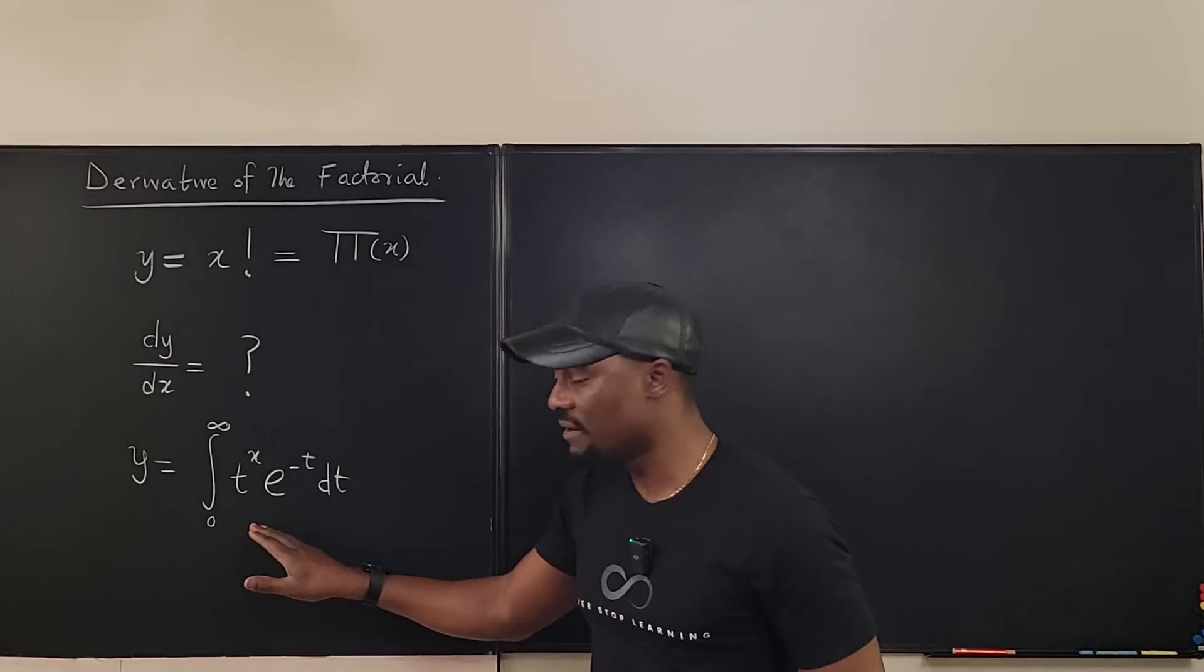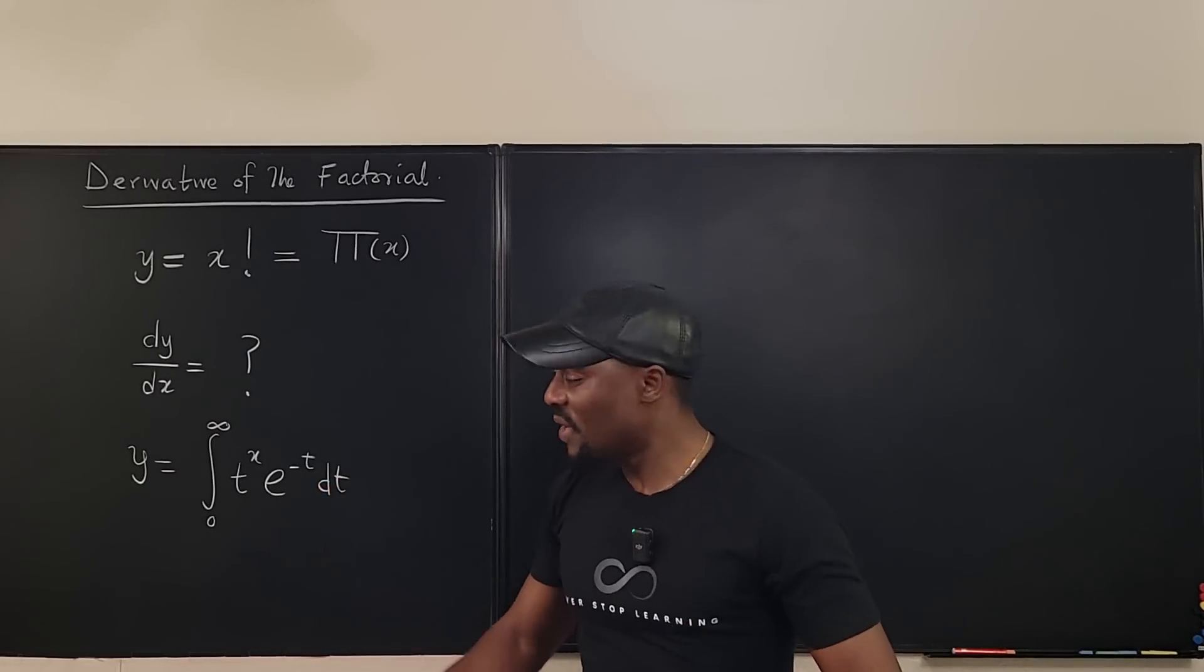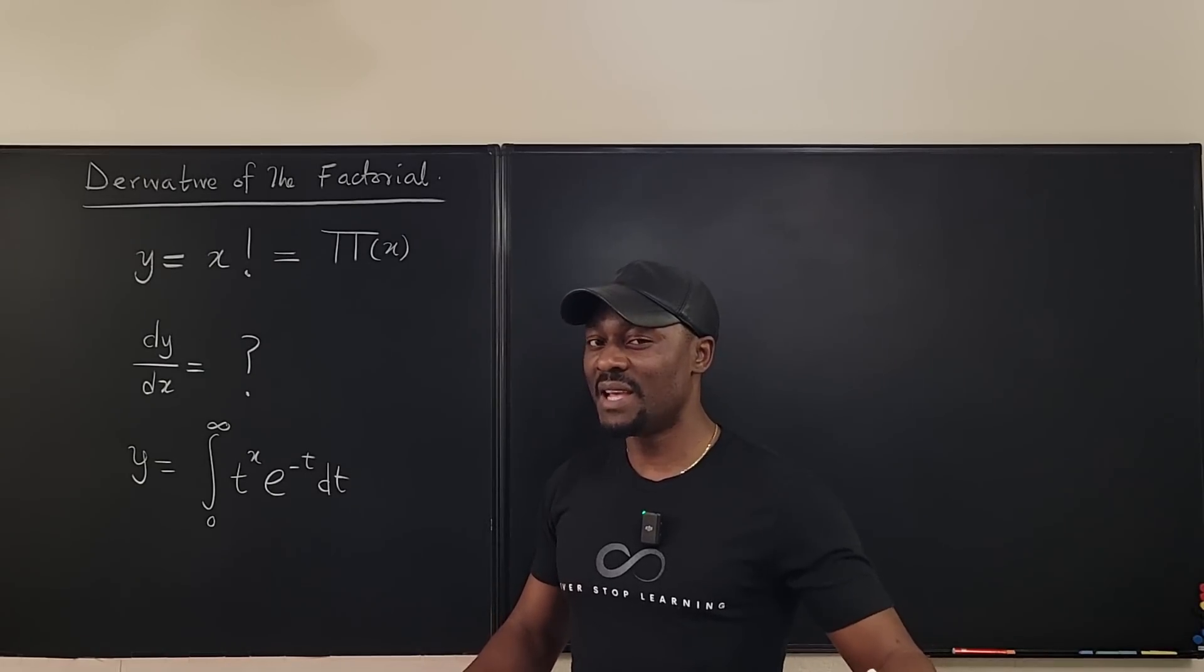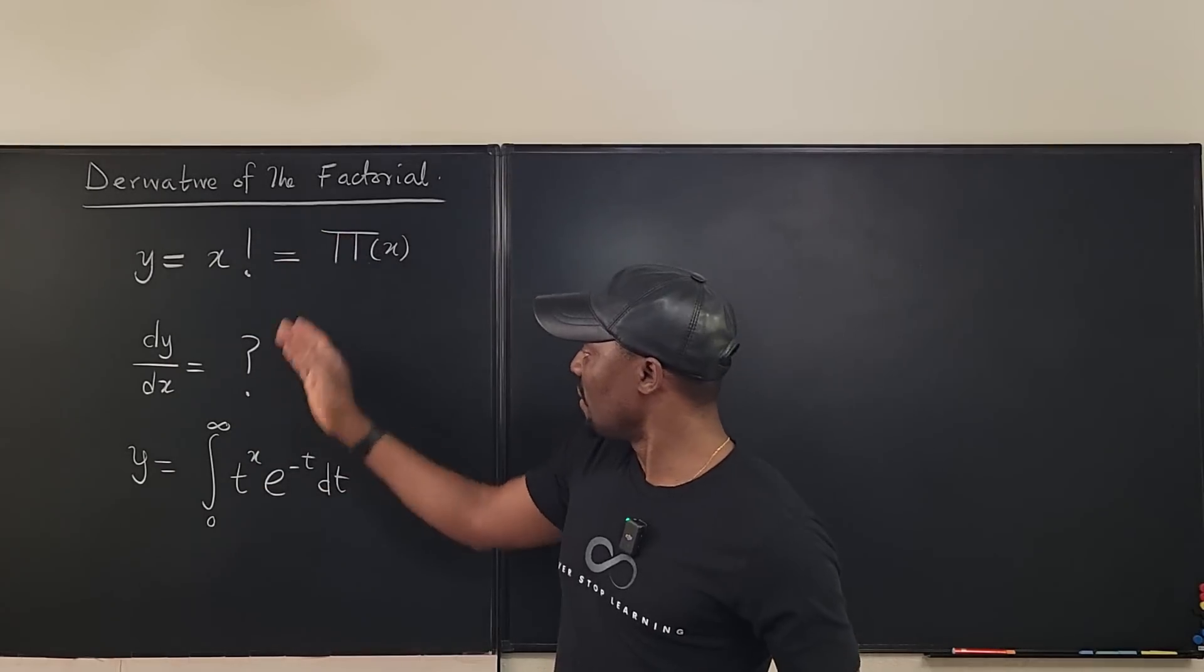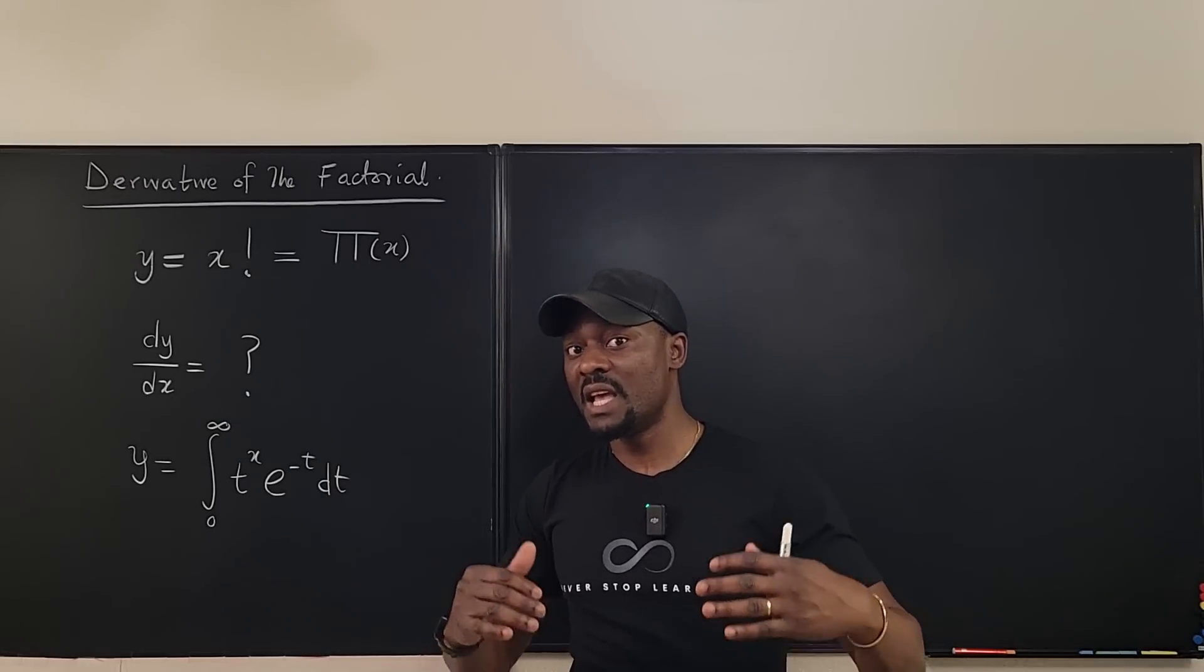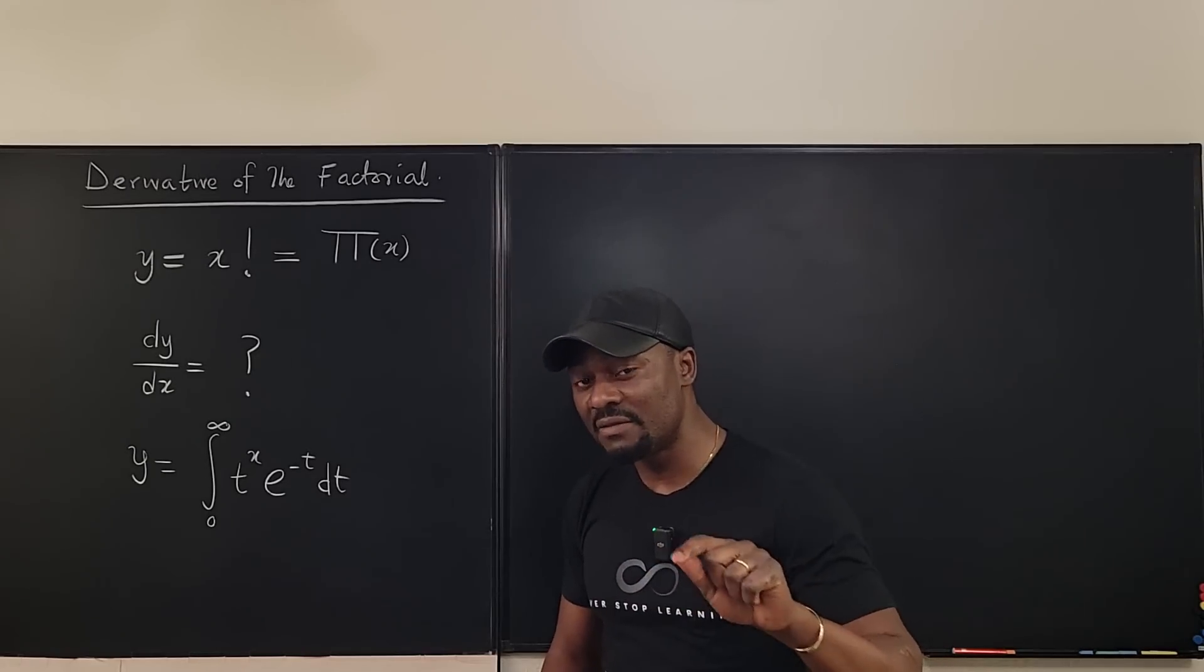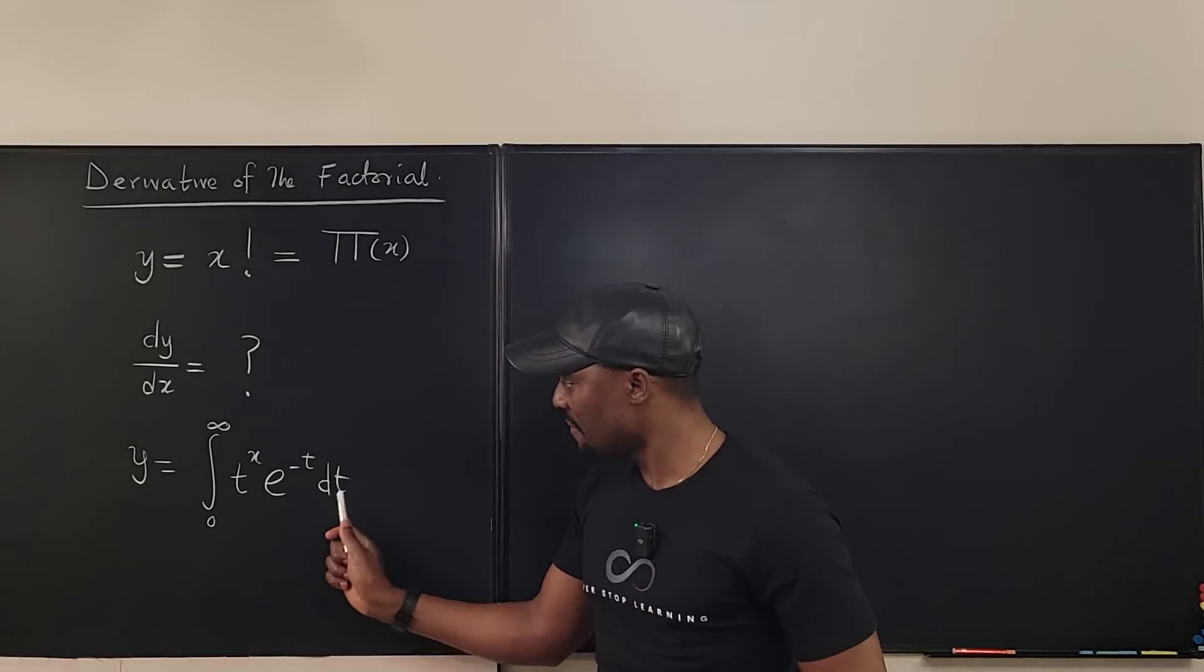Now, this is a multi-variable function. And the only way you can differentiate this is if you apply Leibniz integral rule. I think I mentioned it in the other video when I actually obtained the pi function or the gamma function. When I proved the gamma function, I talked about Leibniz integral rule. And what does it say? It says, if you want to take the derivative of the integral of a multi-variable function,